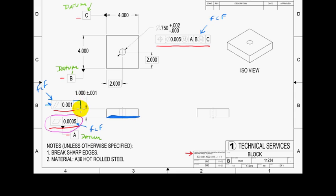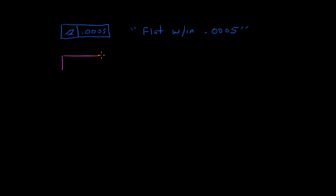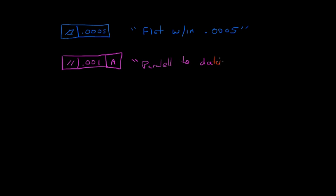The next one is parallelism, hung on the top surface via an extension line. The feature control frame for parallelism is missing a datum box in this drawing — it should have another box. This one would read: parallel to datum A within 0.001. So that top surface must be parallel to datum A within one thousandth of an inch.